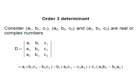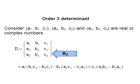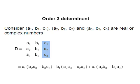The 3 rows are denoted by R1, R2, and R3 respectively. Similarly, A1, A2, A3 form the first column, B1, B2, B3 the second column, and C1, C2, C3 the third column. The 3 columns are denoted by C1, C2, and C3 respectively.